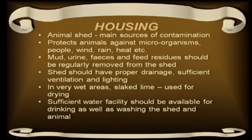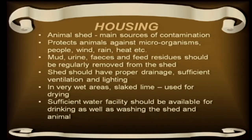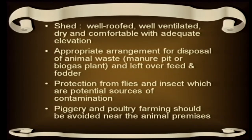For housing, the environment plays an important role. The animal shed is the main source of contamination and should be protected against microorganisms. Dung, wind-blown material, rain, mud, urine, and flies should be regularly removed from the shed. The shed should have proper drainage, sufficient ventilation, and lighting. In wet areas, slaked lime should be used for drying. Sufficient water should be available for drinking as well as washing the shed. The shed should be well-roofed, well-ventilated, dry, and comfortable. There should be appropriate arrangement for disposal of animal waste, protection from flies and insects, and piggery and poultry farming should be avoided within the dairy premises.